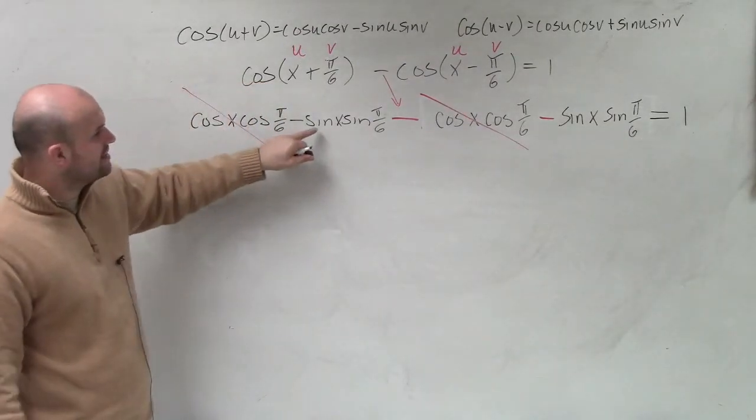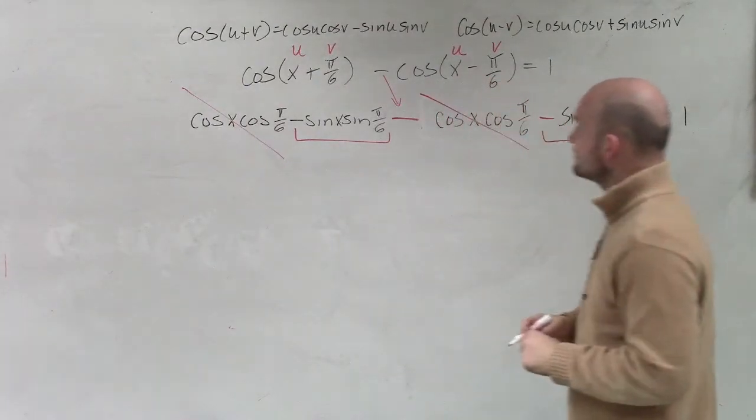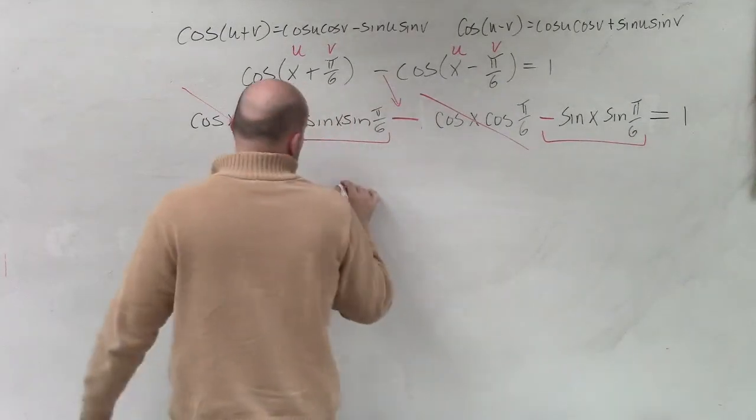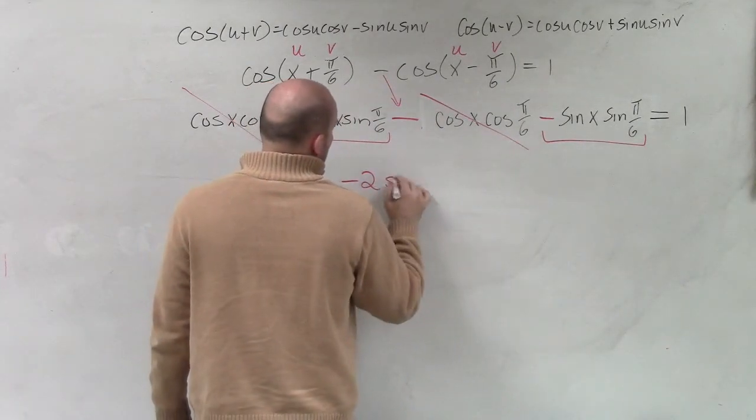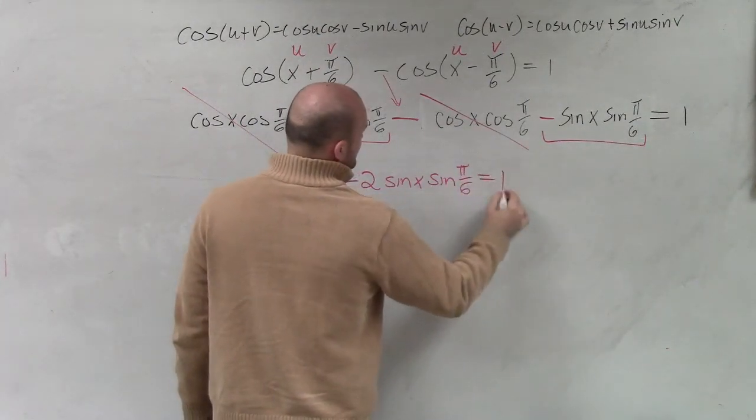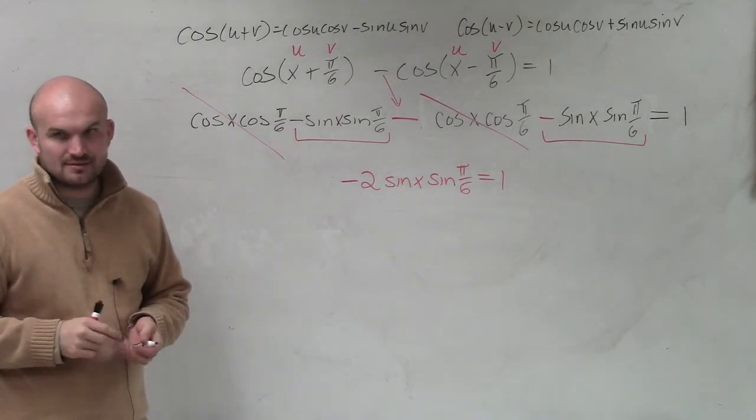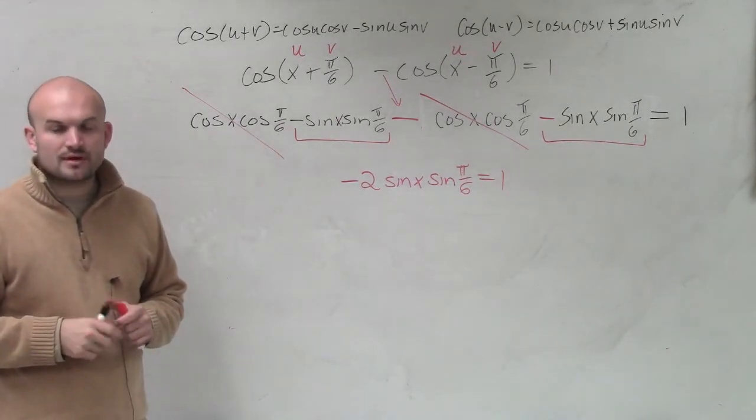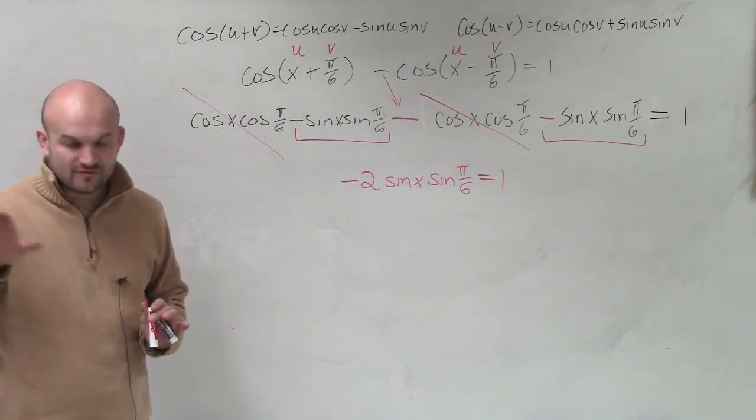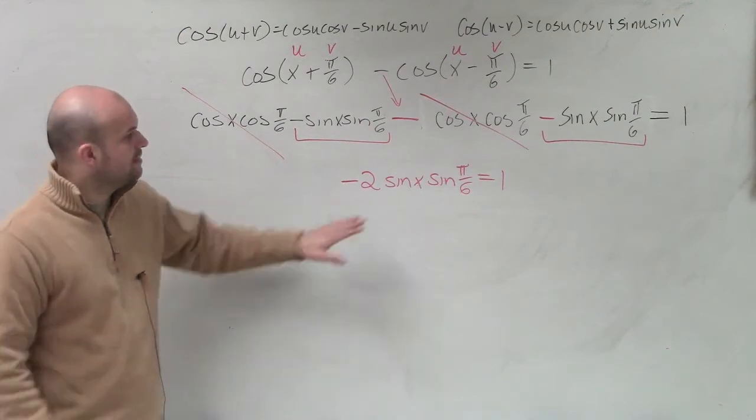So now, I can combine these terms. Well, again, we look at this. These terms, this expression here and this term, I guess you could say here, those are the exact same, but there's two of them. So this is negative 2 sine of x sine of π over 6 equals 1. Does everybody see how I did that?